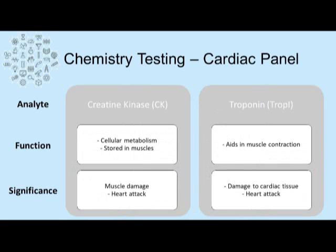For cardiac health, creatinine kinase is used for cellular metabolism and is stored in muscles; an elevated level of creatine kinase could indicate muscle damage or possibly heart attack. More specific to cardiac tissue is troponin, which aids in muscle contraction in the heart, and elevated levels of troponin can indicate damage to the cardiac tissue and possibly heart attack. Troponin is the gold standard for evaluating the presence of a heart attack.